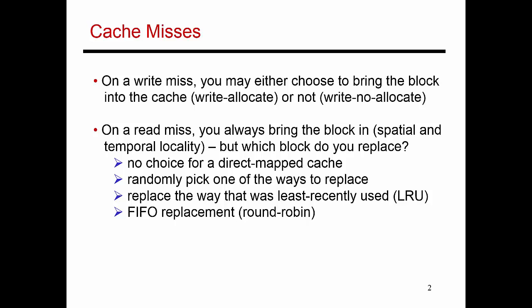One can make the argument that writes exhibit different levels of spatial and temporal locality. In fact, they have a little less locality, because you can assume that doing a write indicates that you're done working on this data and you're putting it away in memory. So if you assume that, then maybe you don't place this block into cache — and that's referred to as a write no-allocate policy.